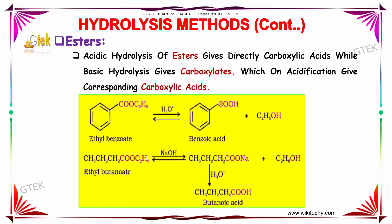Esters: Acidic hydrolysis of esters gives carboxylic acids directly, while basic hydrolysis gives carboxylates which on acidification give the corresponding carboxylic acids. When ethyl benzoate is made to react with H3O+, it produces benzoic acid along with ethanol. When ethyl butanoate is made to react under sodium hydroxide, it produces butanoic acid as well as ethanol.